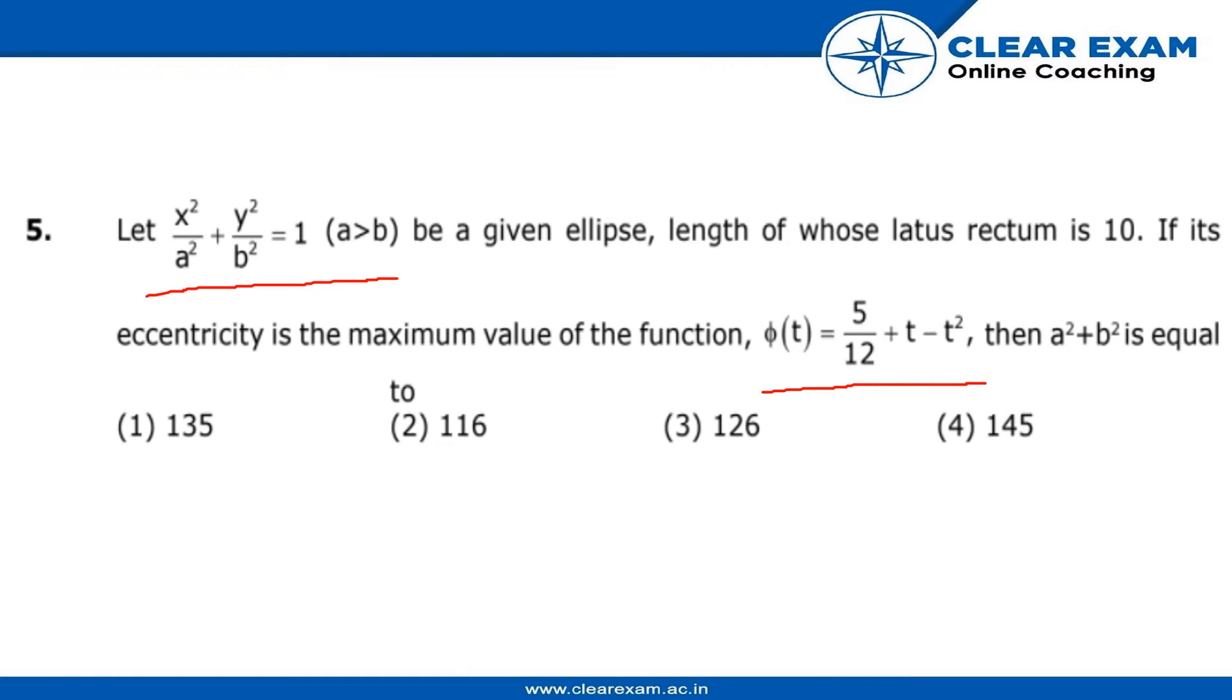phi of t which equals 5/12 plus t minus t squared, then we have to find out the value of a squared plus b squared from the given four options.